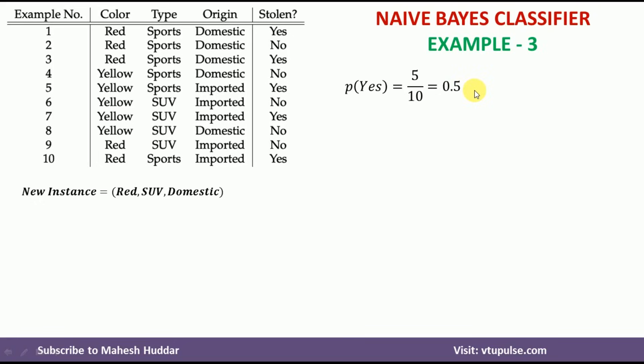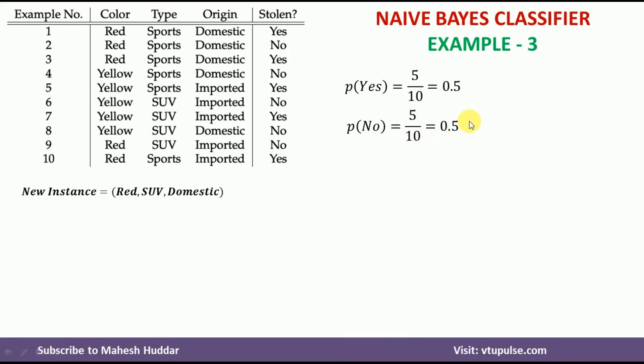Similarly, the probability of no: we count 1, 2, 3, 4, 5 no examples. So the probability of no is 5 divided by 10, which is equivalent to 0.5.